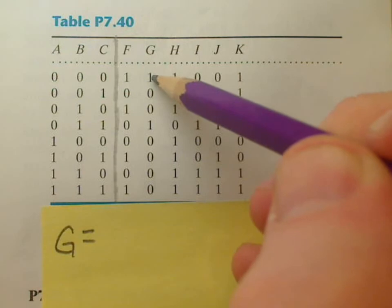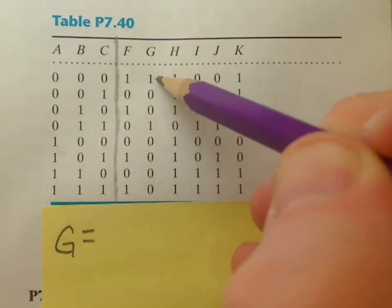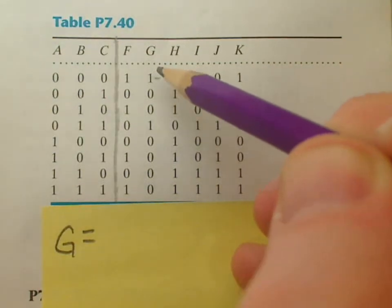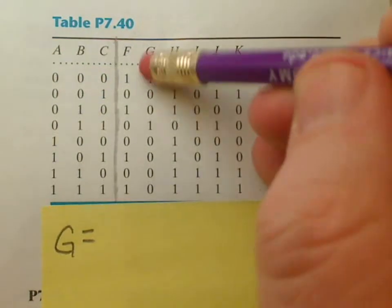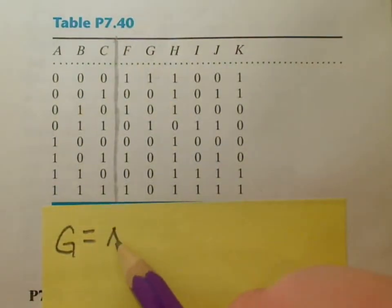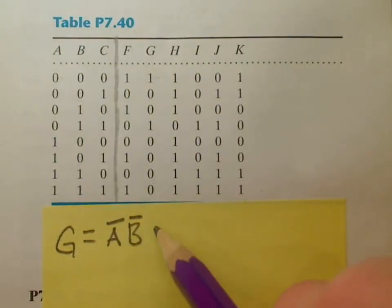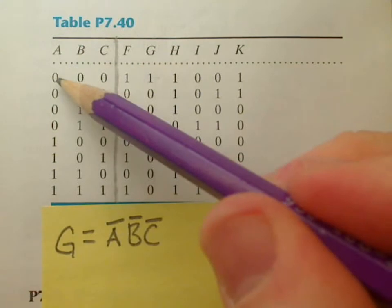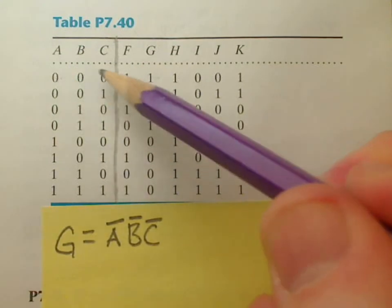Well, the way you do this is any of these rows that have a 1 in them, you write out a logic expression that corresponds to that being 1. So in the first case, it would be where A is not on, B is not on, and C is not on. So it's A naught, B naught, C naught.